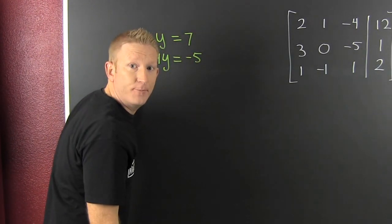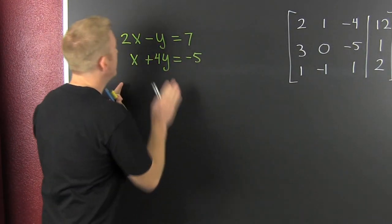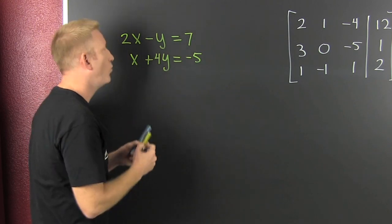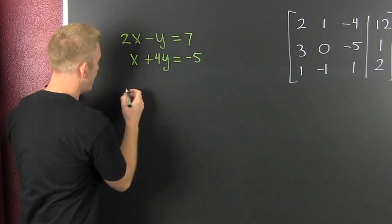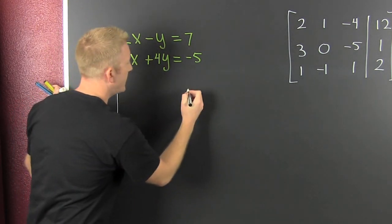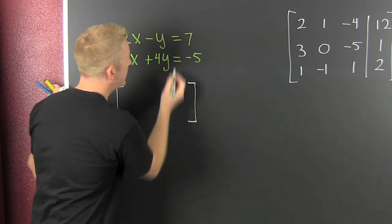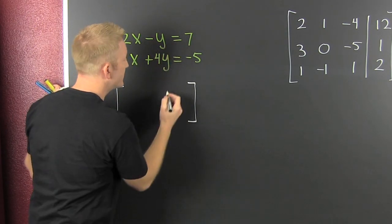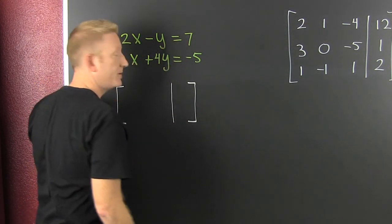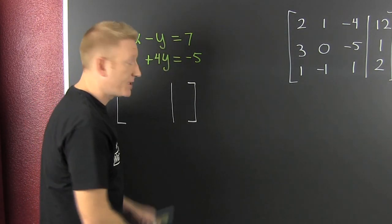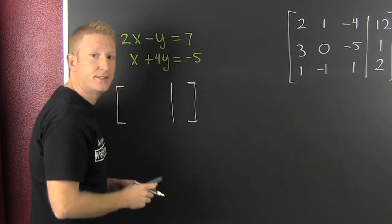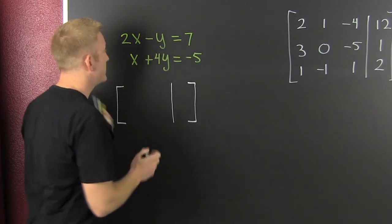I want to write the augmented matrix for this system of equations. Those equal signs — that's this line. It's the coefficient matrix augmented with your answers.